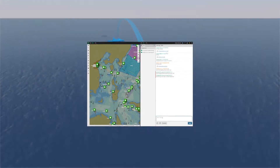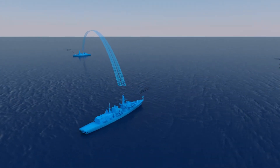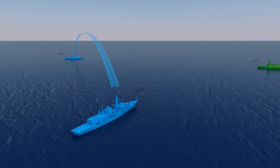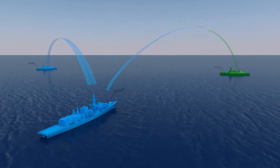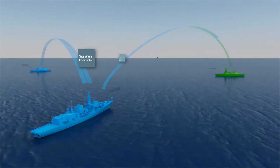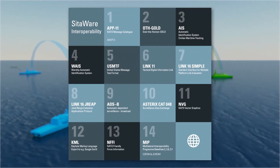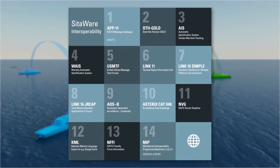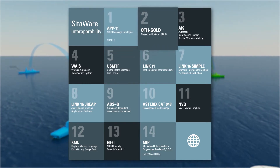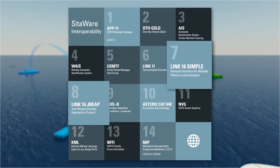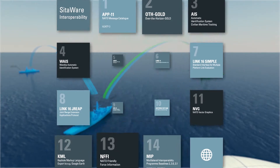Communication is key, and maritime commanders often need to coordinate operations with air and land commands, coalition partners, Coast Guard, or other civilian and governmental agencies. SIDAWARE provides unmatched interoperability with the leading messaging standards, including APP 11, OTH Gold, and LINK 16, ensuring that you speak the same language as your partners.